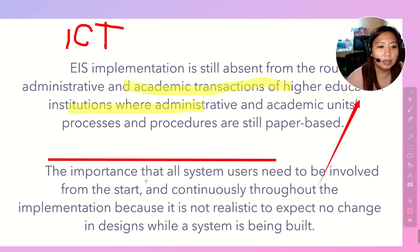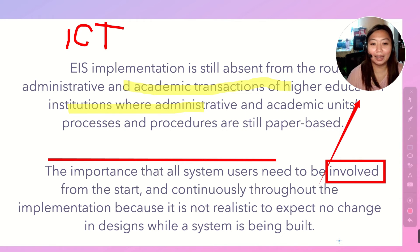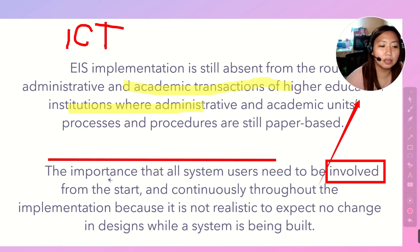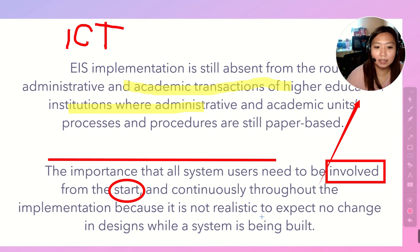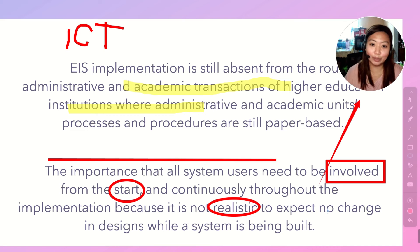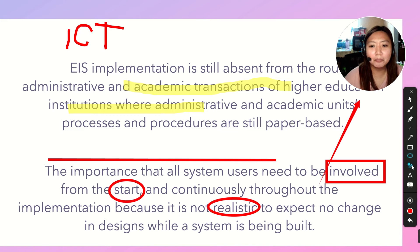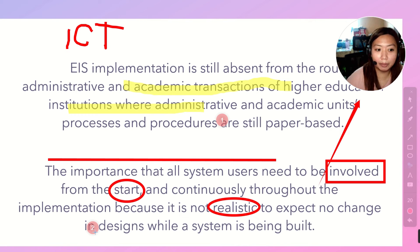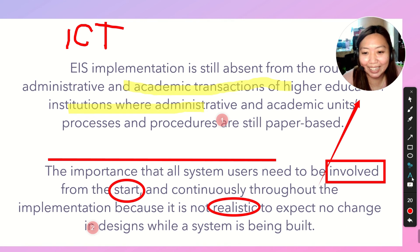You can also draw rectangles to highlight important words — for example, highlighting 'the importance that all system users need to be involved.' There is also an ellipse tool for circling content, and a numbering tool to mark points — for example, numbering 'procedures are still paper-based' as point one, and 'design while a system is being built' as point two.